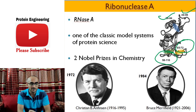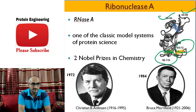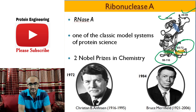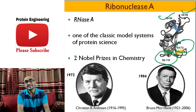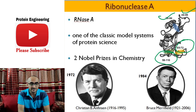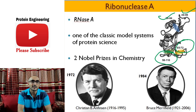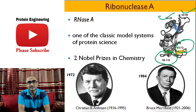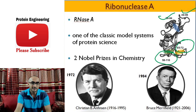Two Nobel Prizes have been given on this single protein. One Nobel Prize was given to Christian Anfinsen in 1972 for the experiment we are discussing today. A second Nobel Prize was given in 1984 to American scientist Bruce Merrifield, who devised a method of protein synthesis known as solid-phase synthesis of proteins and peptides, and using that method he synthesized ribonuclease A.